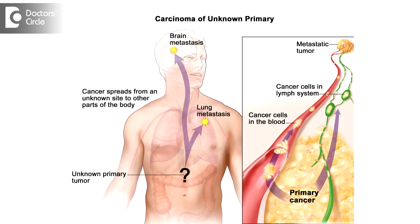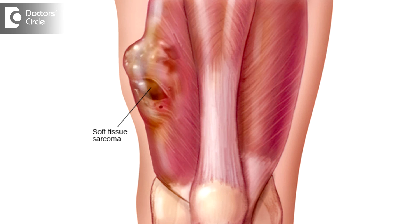We all know that carcinoma spreads by lymphatics — that means the spread of carcinoma is mostly by lymph nodes, but there are certain exceptions to this. Whereas sarcoma spreads by blood, though there are one or two exceptions to this also. But these are the rules and patterns they follow when they start from these particular cells.